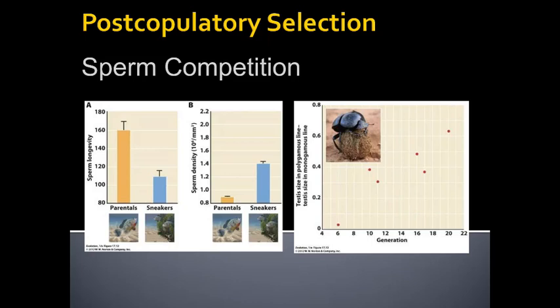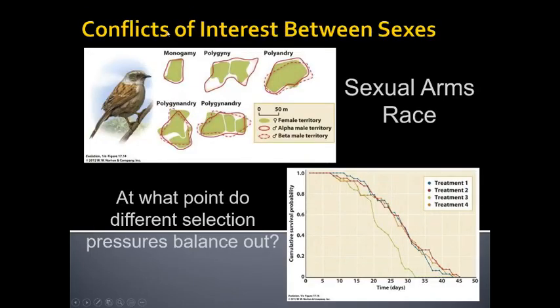This brings up an interesting dynamic. Sometimes these pronounced forms of intrasexual selection — males competing for access to females — are great for the male but can be bad for the female. Females may not have the freedom to move about, look for food, or find another male if they don't like the large, strong male in their area. So it reduces their choices and sometimes reduces their fitness, setting up a conflict between males and females. This is a form of antagonism, where what's good for the males is bad for the females.